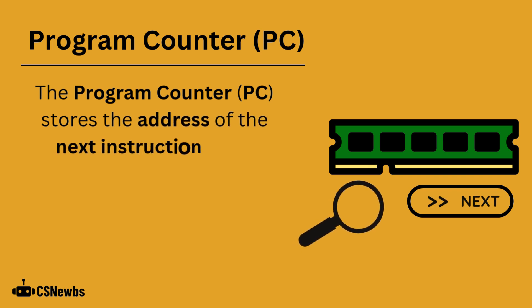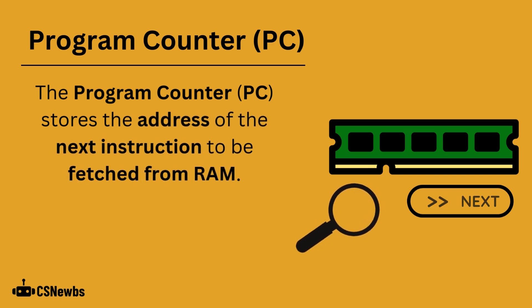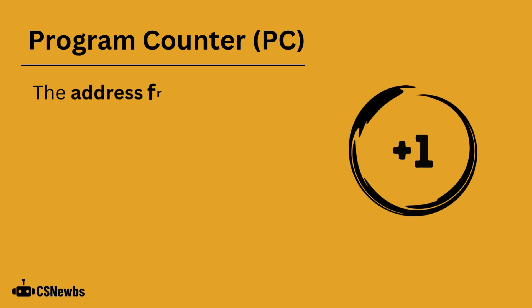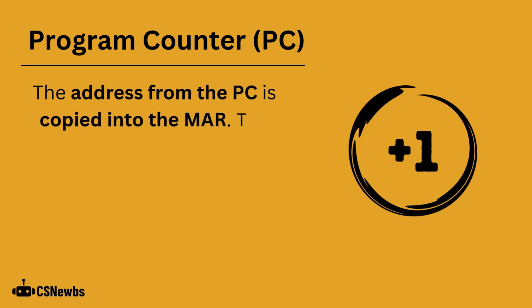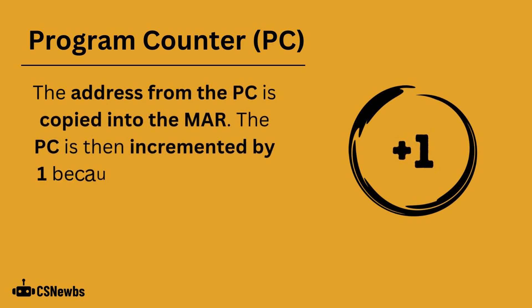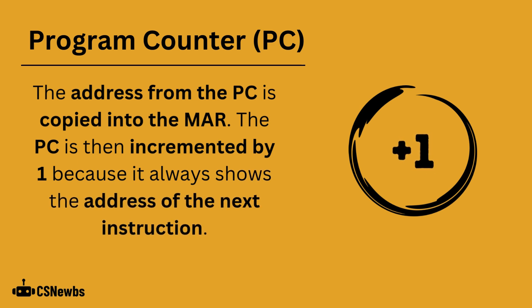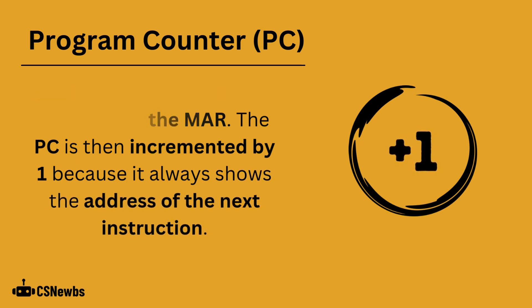The program counter stores the address of the next instruction to be fetched from RAM. The address from the program counter is copied into the memory address register. The program counter is then incremented by 1, because it always shows the address of the next instruction.